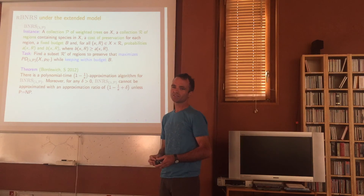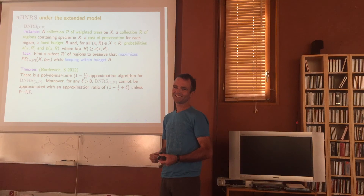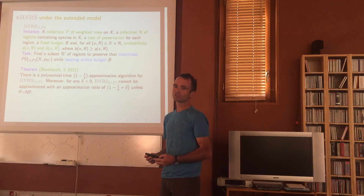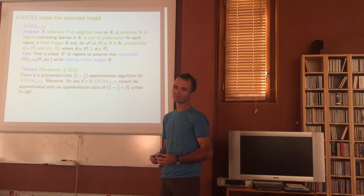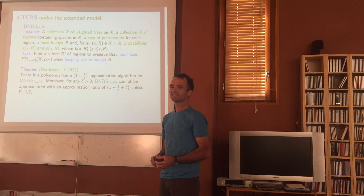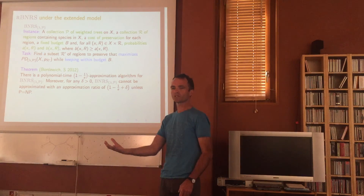A question arises: if Jack Edmonds were in the room, he might say these are really polymatroids and that Sviridenko's result is a special case of something he proved years ago — even getting an exact result. But you can't get an exact result here because the problem is hard in general, even in particular instances. Jack Edmonds didn't work on approximation, so that distinction matters.